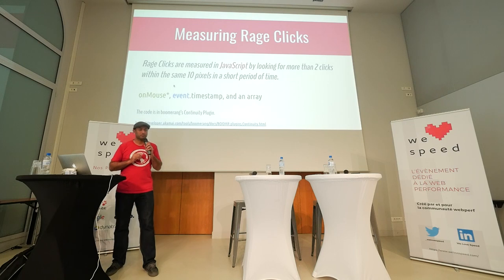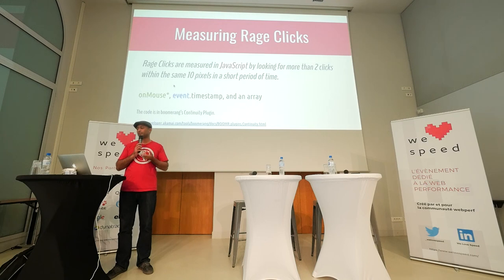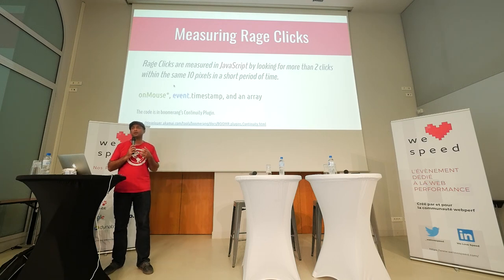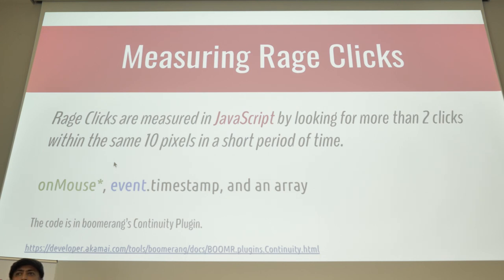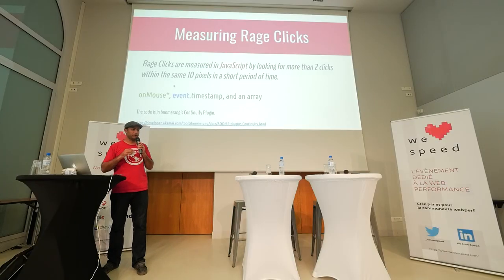Let's get back to measuring rage clicks. It's very easy to measure in JavaScript. We hook onto the onMouseDown event because that's more reliable for capturing mouse clicks and movements. We look for any clicks that happen multiple times on the same element, or within 10 pixels of the same element. We capture event.timestamp to see when it was clicked. If more than two clicks happen within 100 milliseconds, depending on how many clicks the time threshold increases, we register that as a rage click. We store that in a queue so you get rage clicks across the lifetime of the page. The code is in Boomerang's continuity plugin.